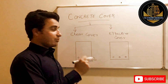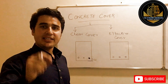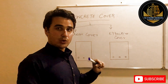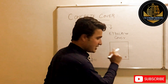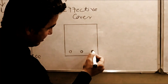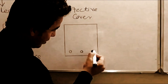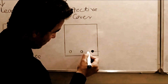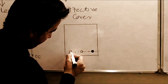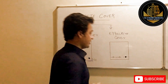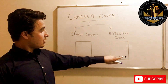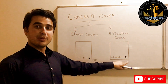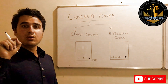Now, the effective cover. The effective cover is the distance between the outermost fiber of this member and the center of the rebar. Looking at this beam, these three are the steel bars present. The center point of this bar, and the outermost fiber of this member — that distance is what we call the effective cover.